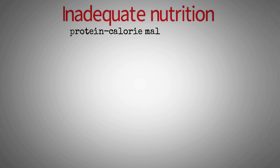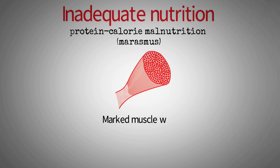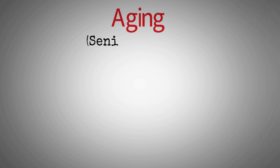Inadequate nutrition: profound protein-calorie malnutrition (marasmus) is associated with the use of skeletal muscle as a source of energy after other reserves such as adipose stores have been depleted. This results in marked muscle wasting, known as cachexia.